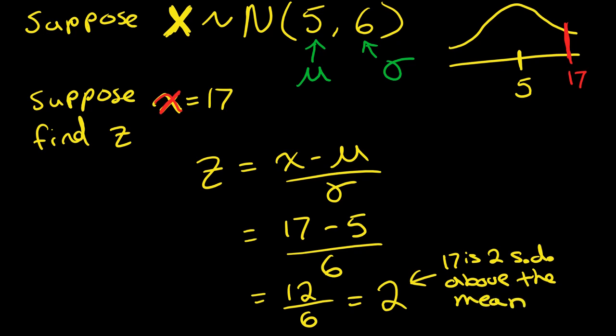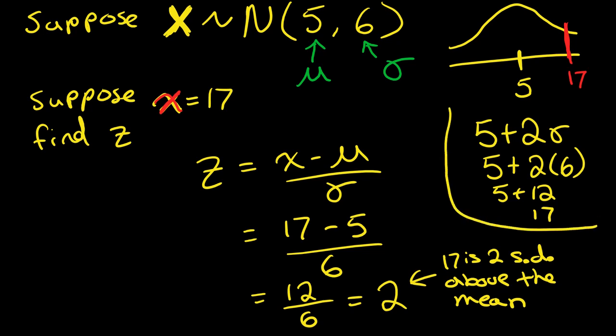If we look back at this normal distribution that I drew up top here, what is that saying? Basically, if I were to go to 5 and then add on two standard deviations, 2 sigma - or in other words, 5 plus 2 times sigma, which is 6 - that's 5 plus 12, which is 17.